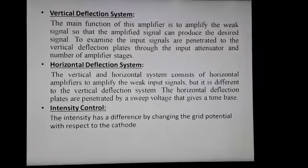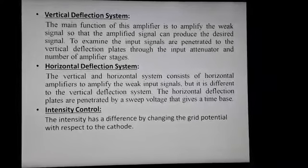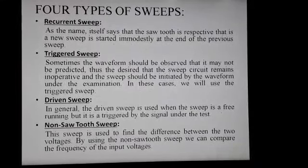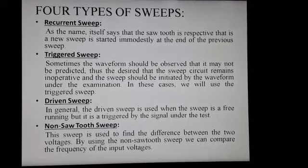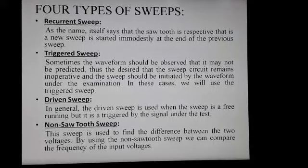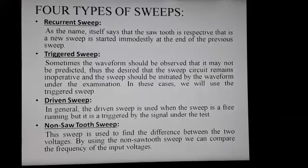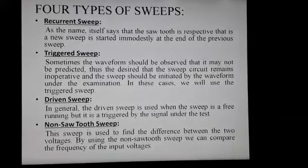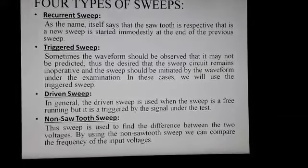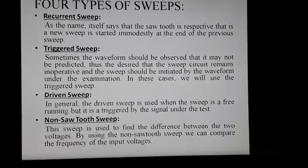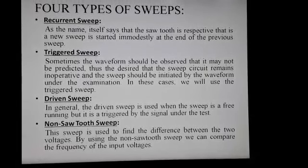Intensity control: the intensity can be varied by changing the grid potential with respect to the cathode. There are mainly four types of sweeps. The first is recurrent sweep — as the name suggests, the sawtooth wave is repetitive, meaning a new sweep is started immediately at the end of the previous sweep. The second is triggered sweep — sometimes the waveform to be observed may not be predictable, so the sweep circuit remains inoperative and the sweep is initiated by the waveform under examination.